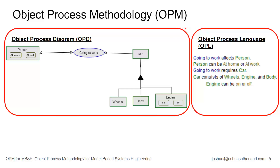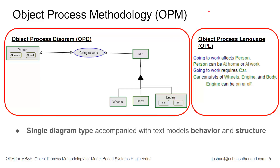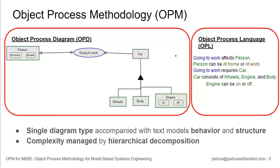If we read this text: 'going to work affects person.' Person can be at home or at work — these are the states of the person. And going to work requires car. And car consists of wheels, body and engine. And engine can be on or off. So in the single diagram type, we can show behavior — going to work is a behavior — and structure, so car is made up of different parts. And complexity is managed by hierarchical decomposition.